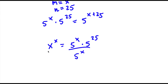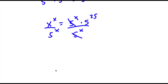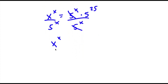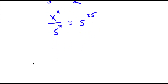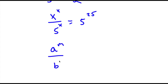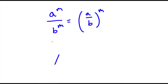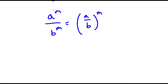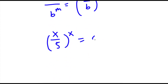So now we have x to the power of x is equal to 5 to the power of x times 5 to the power of 25. Now if I divide both sides by 5 to the power of x, these two will cancel out and I will have x to the power of x over 5 to the power of x is equal to 5 to the power of 25. Now if I have a to the power of m over b to the power of m, this equals a over b to the power of m.